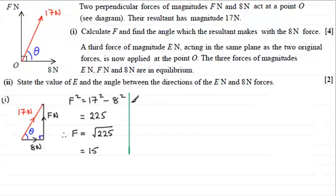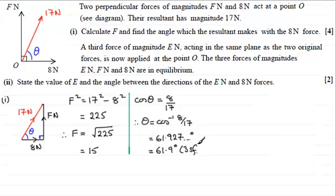So I'm going to go for cosine theta. Cosine theta equals the adjacent side, which is 8, over the hypotenuse, which is 17. Therefore, to get theta I take the inverse cosine of both sides, so inverse cosine of 8 seventeenths. That turns out to be 61.927 degrees, and if we give this to three significant figures, that would be 61.9 degrees to 3SF.